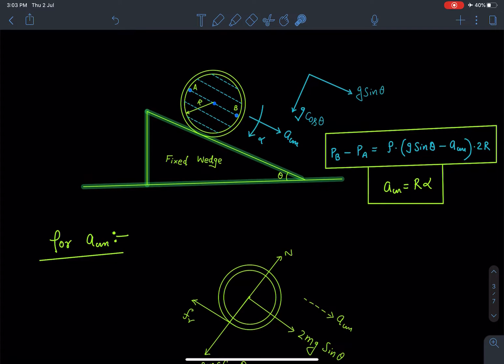So here directly I can write this pressure difference between B and A. Now this component of g sinθ will behave as g and acceleration a_CM will behave like acceleration of vessel. So directly I can write this expression as ρ(g sinθ - a_CM) times distance between the two points which is 2R in this case.